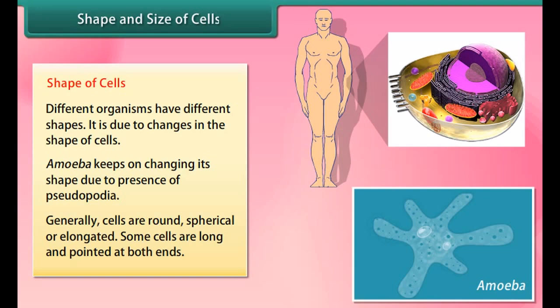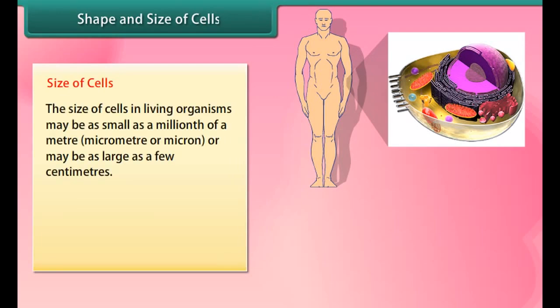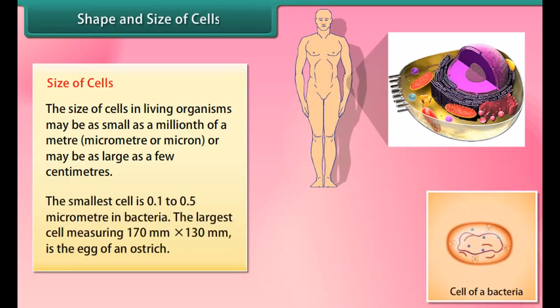Shape and size of cells: Different organisms have different shapes, which is due to changes in the shape of cells. Amoeba keeps on changing its shape due to the presence of pseudopodia. Generally, cells are round, spherical, or elongated. Some cells are long and pointed at both ends.